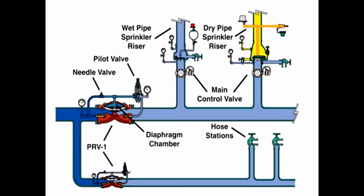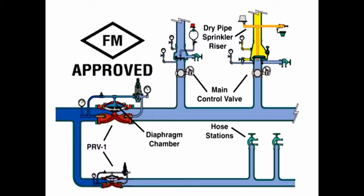The valve is intended to automatically maintain the outlet set pressure within a close range. The PRV1 is both UL listed and FM approved.